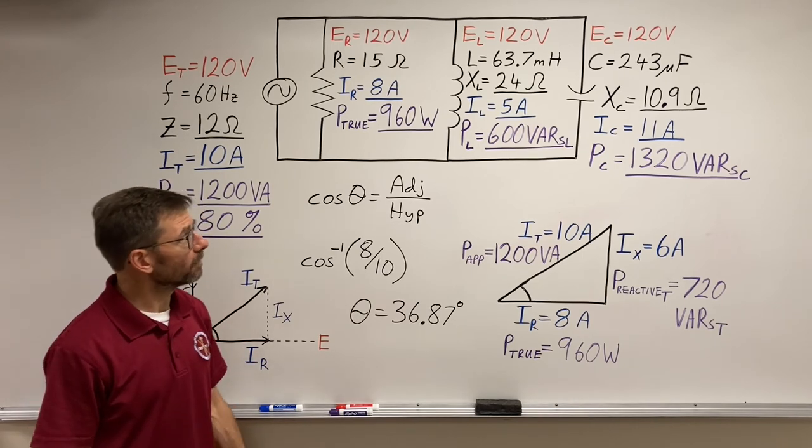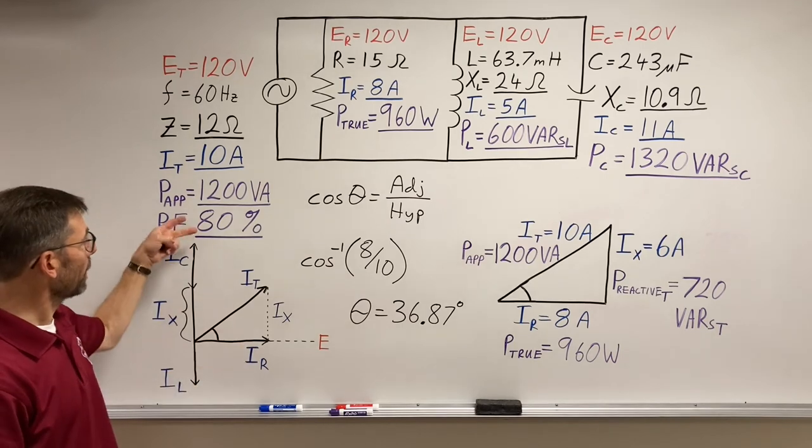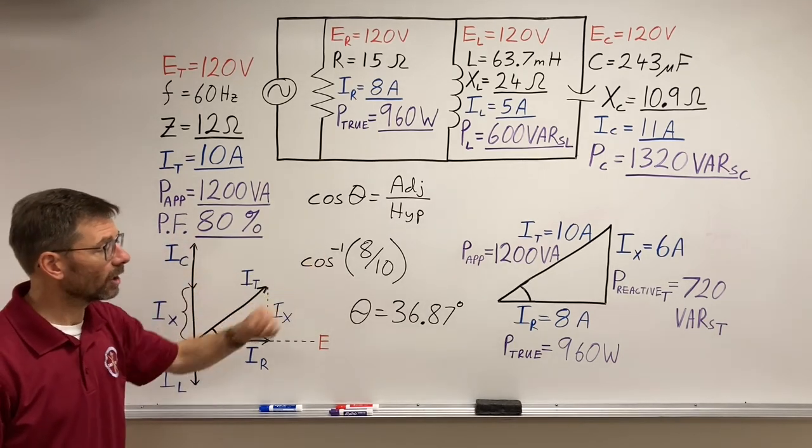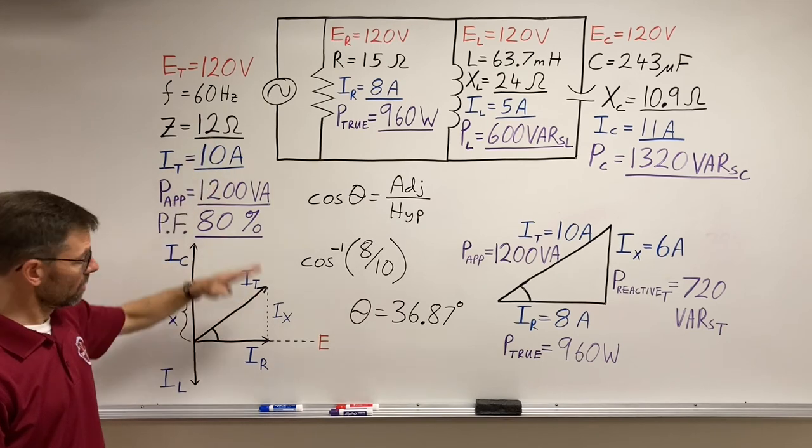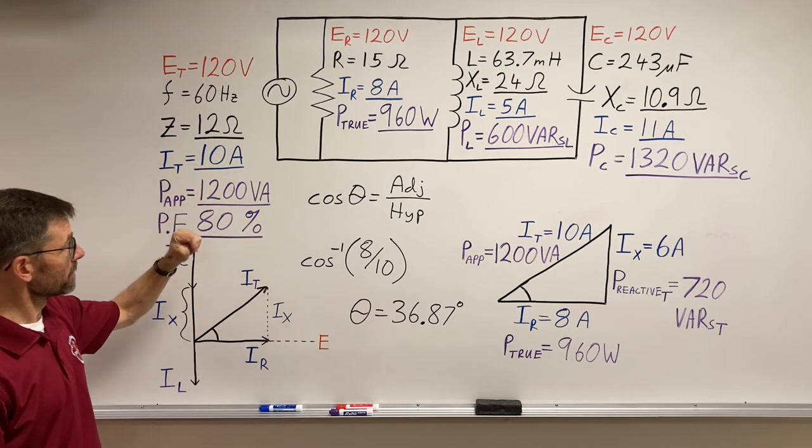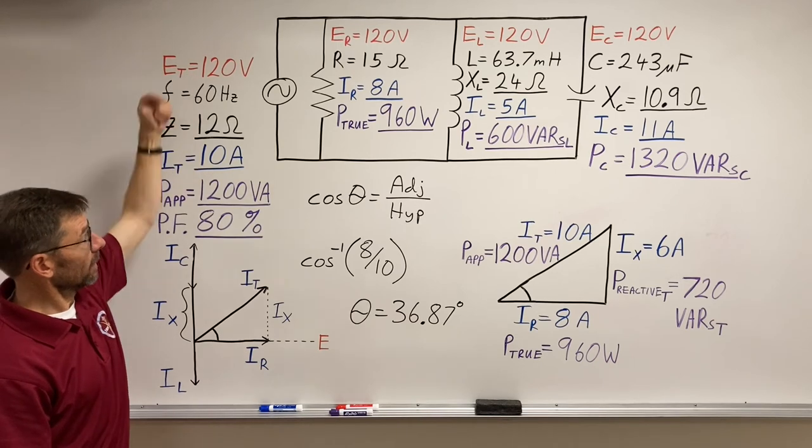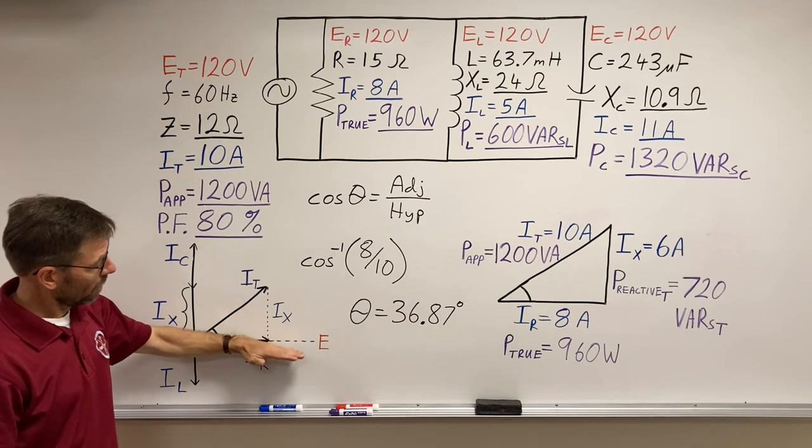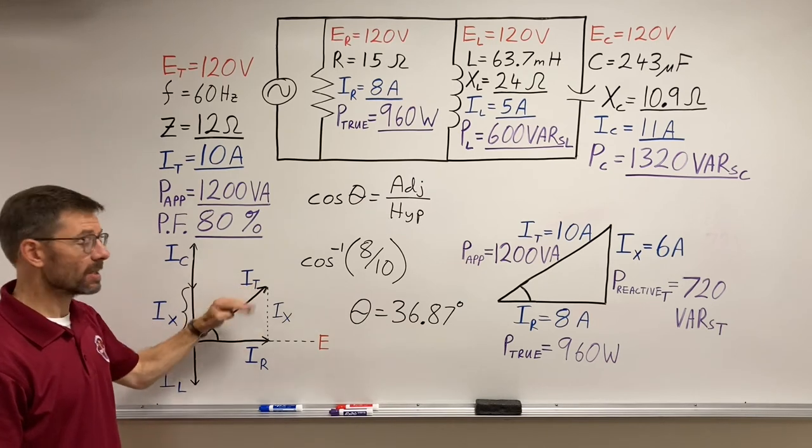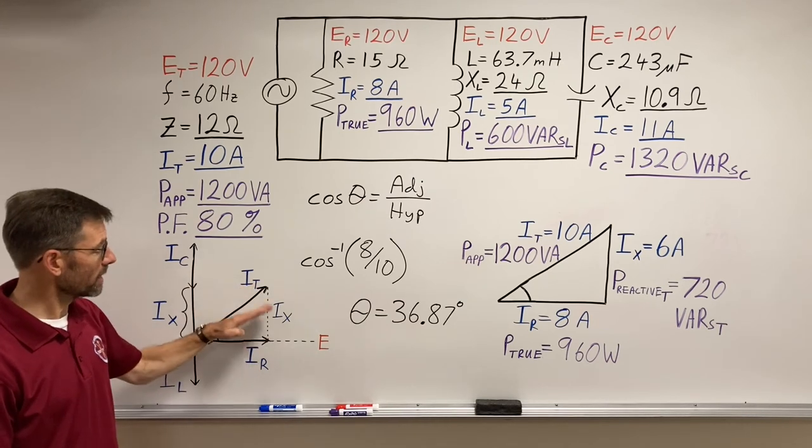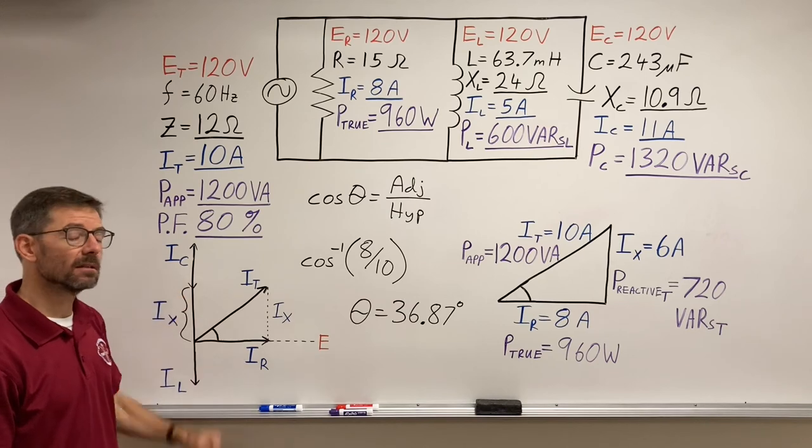And that's what we have. Power values, power factor, finding our angle theta. So at the source, this current, this 10 amps, is leading the applied voltage by 37 degrees. It's a capacitive circuit. It's pointing up into capacitive territory.